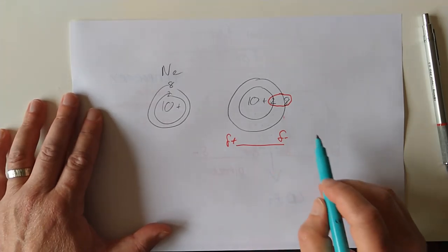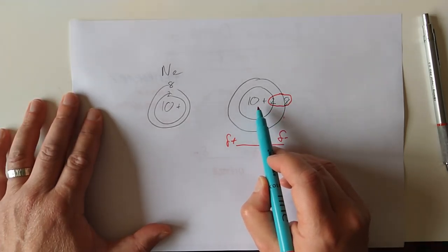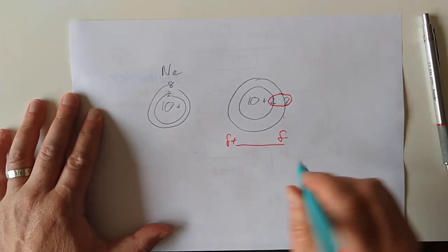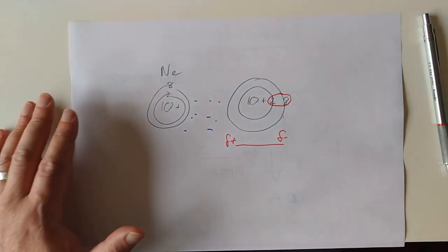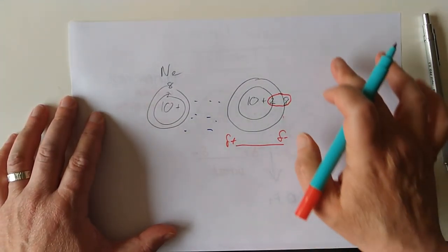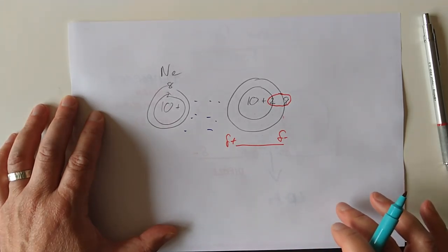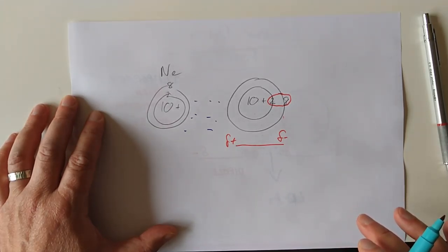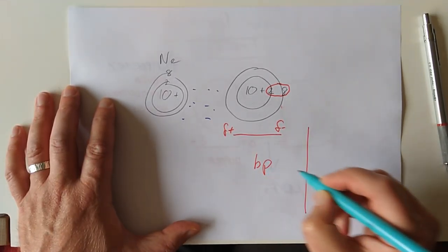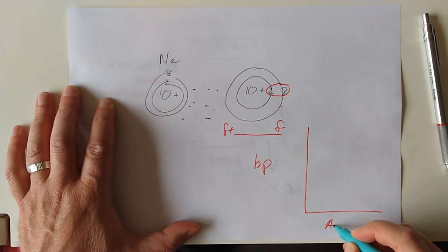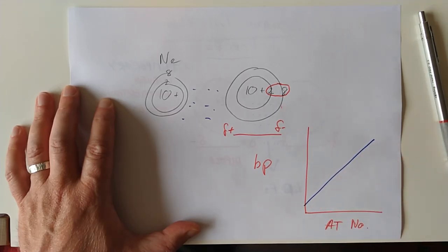The larger number of electrons there is per atom, the larger this delta can be and the stronger the LDFs will be. If that statement is correct, as you go down group 8, the London dispersion forces should become stronger and the boiling points should rise. And in fact, that is precisely what you see.